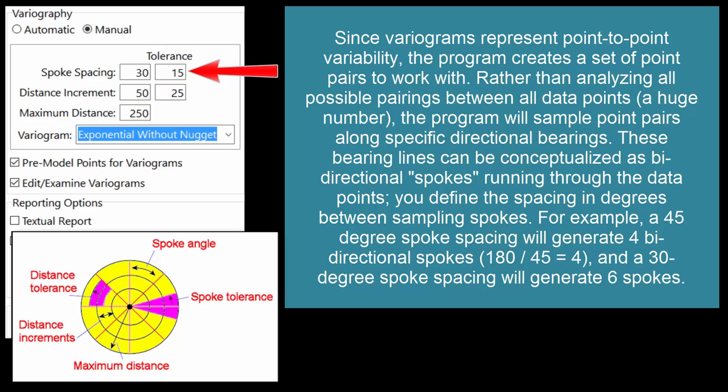For example, a 45-degree spoke spacing will generate four directional spokes, and a 30-degree spoke spacing will generate six spokes.